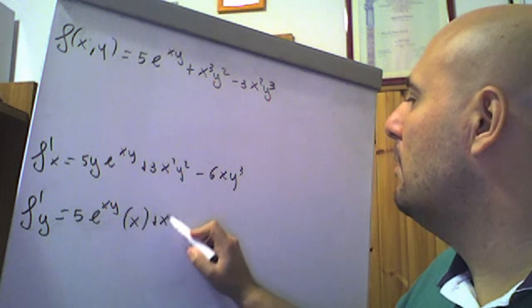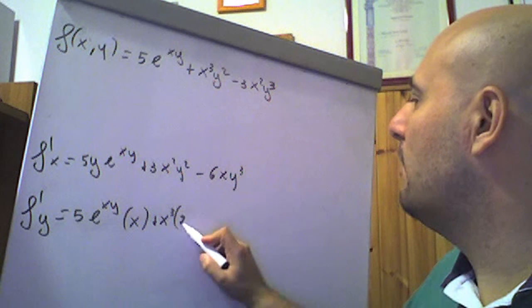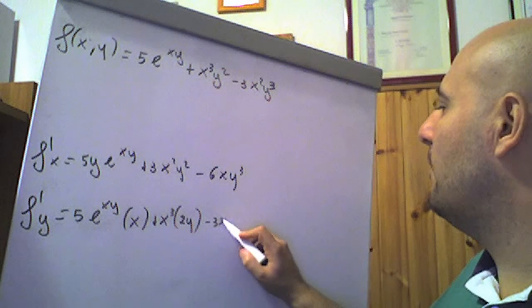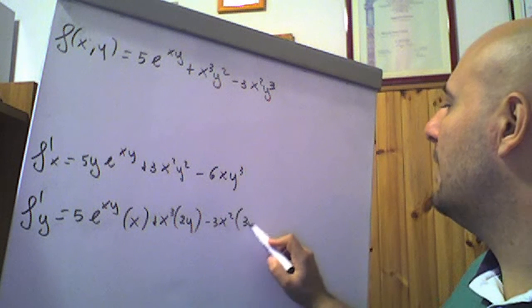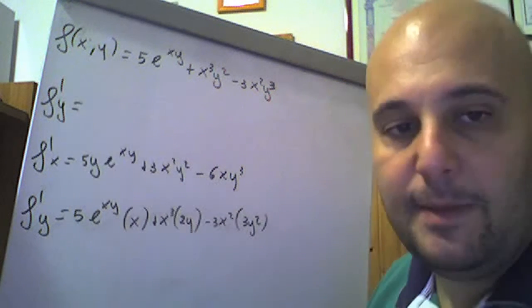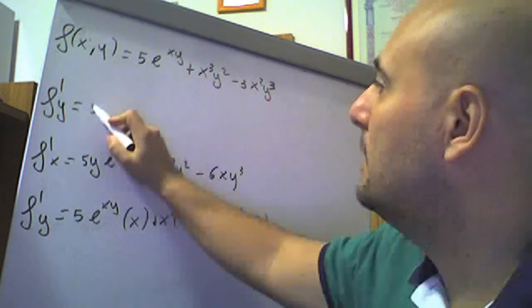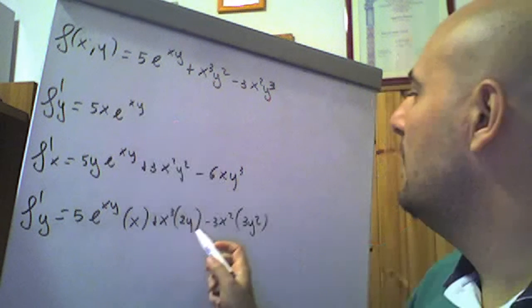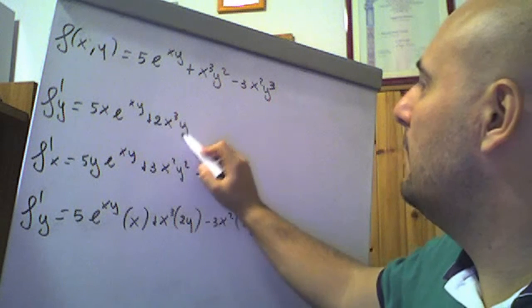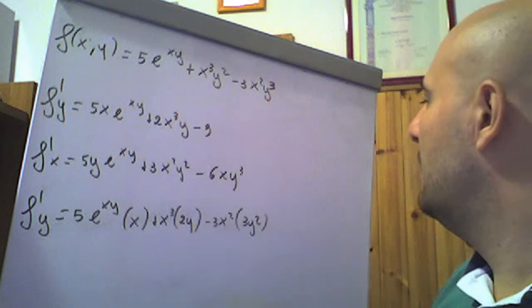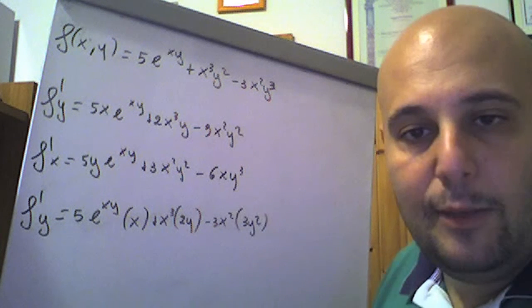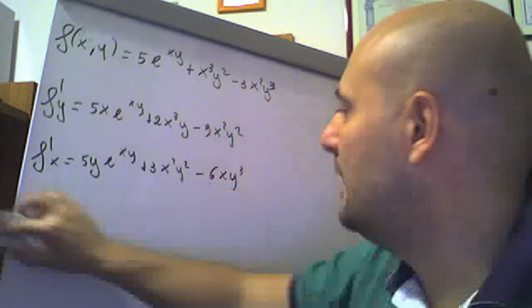Questa volta sta fuori un x cubo, derivata di y quadro è 2y, stiamo derivando rispetto alla y, ricordiamolo. Meno 3x quadro questa volta è una costante, derivata di y cubo è 3y al quadrato. Pertanto la derivata parziale prima della f fatta rispetto alla y sarà 5x·e^(xy) più 2x³y meno 9x²y².